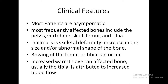Regarding clinical features, most patients are asymptomatic. The most frequently affected bones are those of the pelvis, vertebrae, skull, femur, and tibia, with the lumbar spine affected most. The hallmark is skeletal deformity — there is an increase in size and/or abnormal shape of the bone. Bowing of the femur or tibia can occur, and there is increased warmth over an affected bone, usually the tibia, due to increased blood flow.